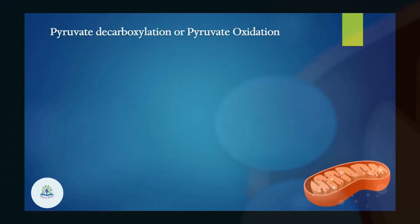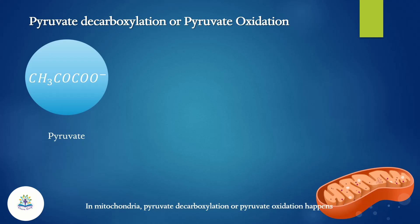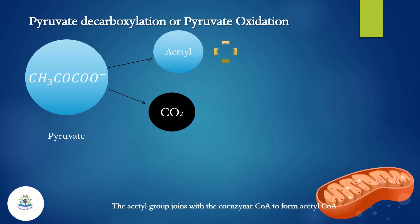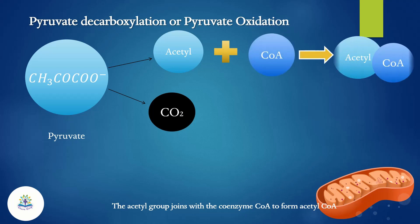In the mitochondria, pyruvate decarboxylation or pyruvate oxidation happens. The end carbon of the pyruvate molecule is removed to form an acetyl group and carbon dioxide. The acetyl group then joins with the coenzyme CoA to form acetyl-CoA.